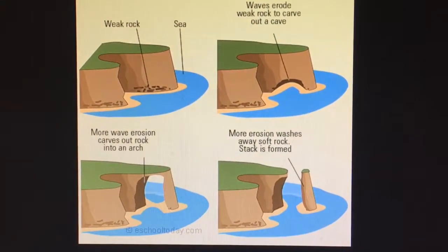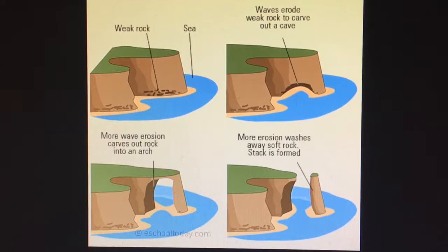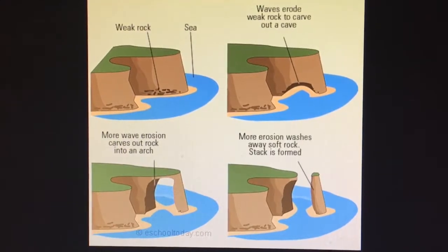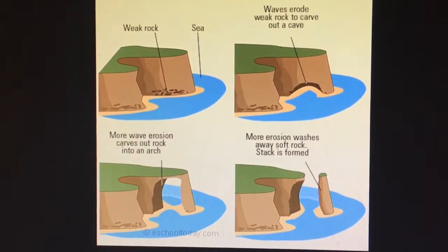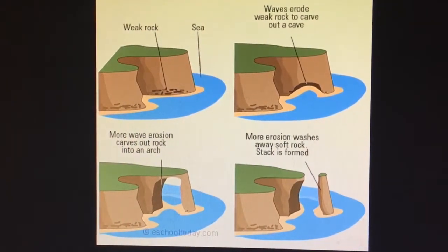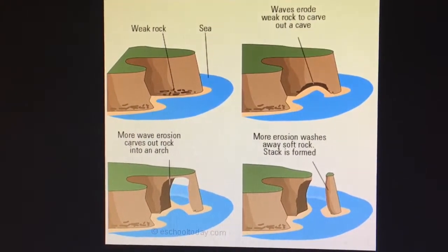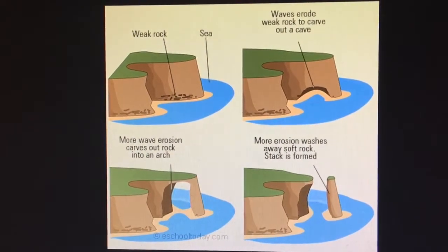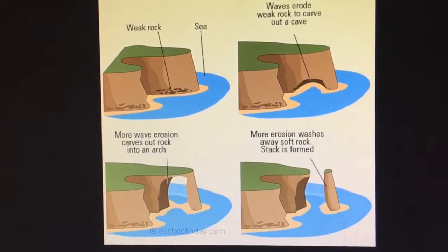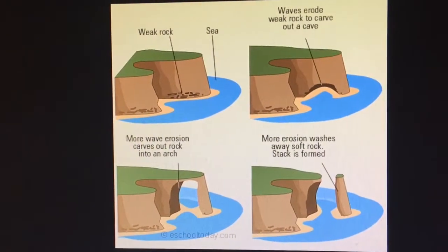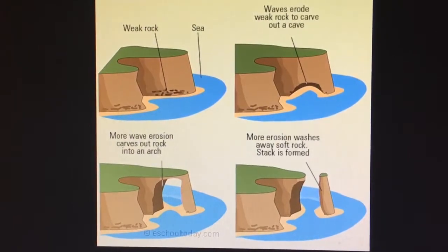Before we can talk about our rock bridges, we have to establish what erosion is, since this is how they are formed. Erosion is the process by which the surface of the earth is naturally worn down. This can be from rain, this can be from wind, but it is a natural process — not a man-made process.